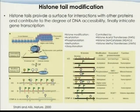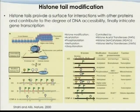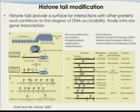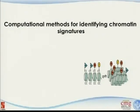The modifications include acetylation, phosphorylation, methylation, and ubiquitination. With different types of flags, there are different modifications that correspond to different biological meanings. For example, histone 3 K4 dimethylation means histone 3 at the fourth position in the tail, which is a lysine, has two methylation sites on it. This type of coding is also called the histone code.